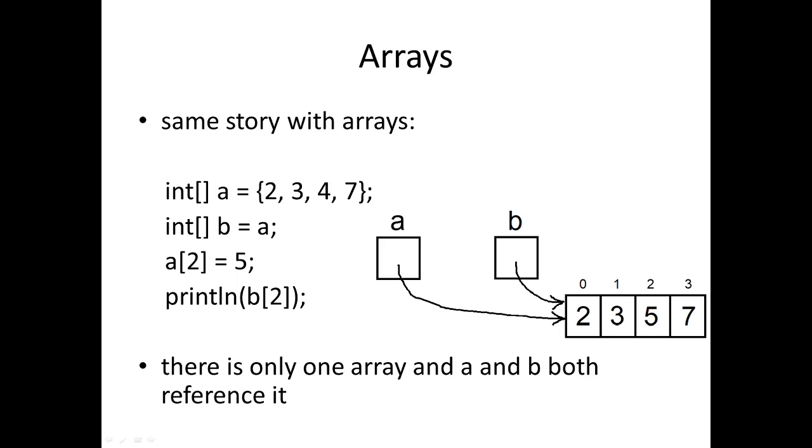We get the same story here. We've got an array a with values 2, 3, 4, 7. We do our assignment of a getting assigned to b, we change the a[2] element to be 5 instead of the 4 that it is, and we print out the b[2] element. We can see from the memory diagram, just like with the PVectors, that there is only one block that represents the array. We just have two references to it - a and b are both pointing to the same thing. So b[2] is going to be 5 as well.